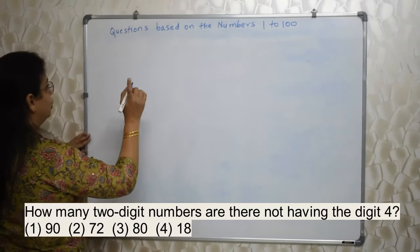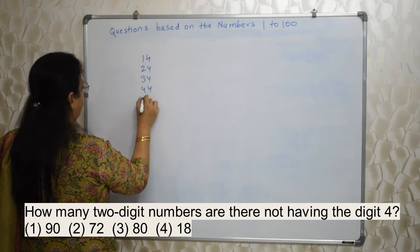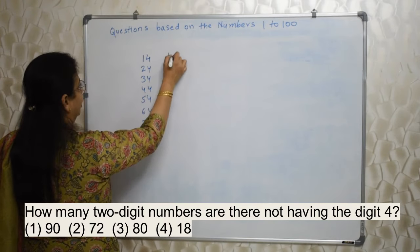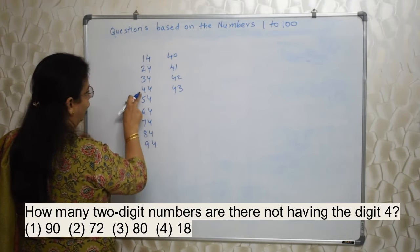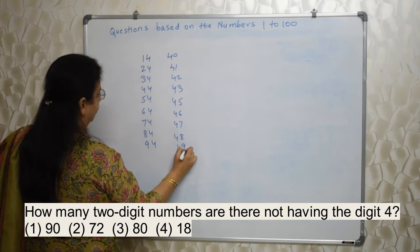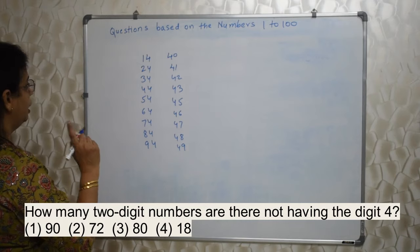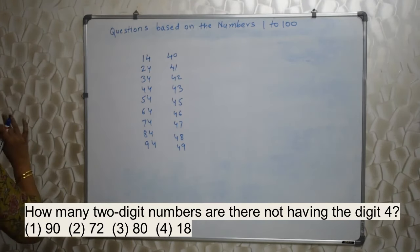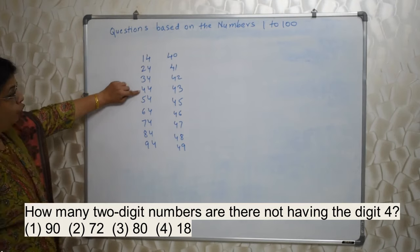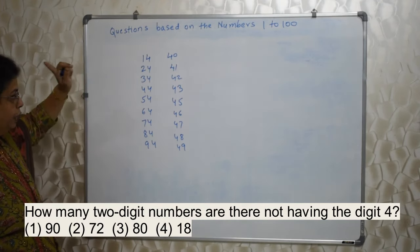They are asking not having 4, so we will write having 4. Two-digit means we are not supposed to take single digit 4. We should start with 14, 24, 34, 44, 54, 64, 74, 84, 94. But here 40, 41, 42, 43, 44 I have taken already, so 45, 46, 47, 48, 49. These many numbers are there. Students, please be careful with the wording. They are asking how many numbers, not how many times 4 occurs. So 44 we have to take as one number.